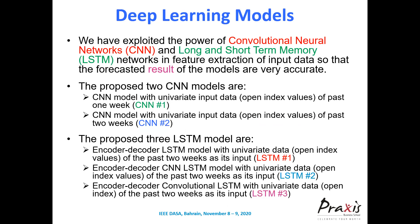We exploited the power of CNN and LSTM in building our models. The CNN models are of two types: CNN1, which is univariate with one week of prior data as input, and CNN2, a CNN model with two weeks of prior data as input. There are three LSTM models: an encoder-decoder LSTM with two weeks of prior data, an encoder-decoder CNN-LSTM with two weeks of prior data, and an encoder-decoder convolutional LSTM with two weeks of prior data.